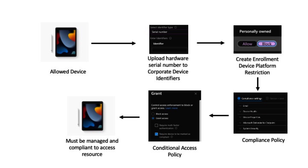We're also going to create an enrollment restriction and we're going to block the enrollment of personal devices. Once we do that, we're going to create a compliance policy in Microsoft Endpoint Manager. And then lastly, we're going to create a conditional access policy in Azure Active Directory that says you have to have a compliant device in order to connect. Basically, when I go to access that corporate app or resource, my device needs to be managed by Microsoft Endpoint Manager and compliant in order to get access.